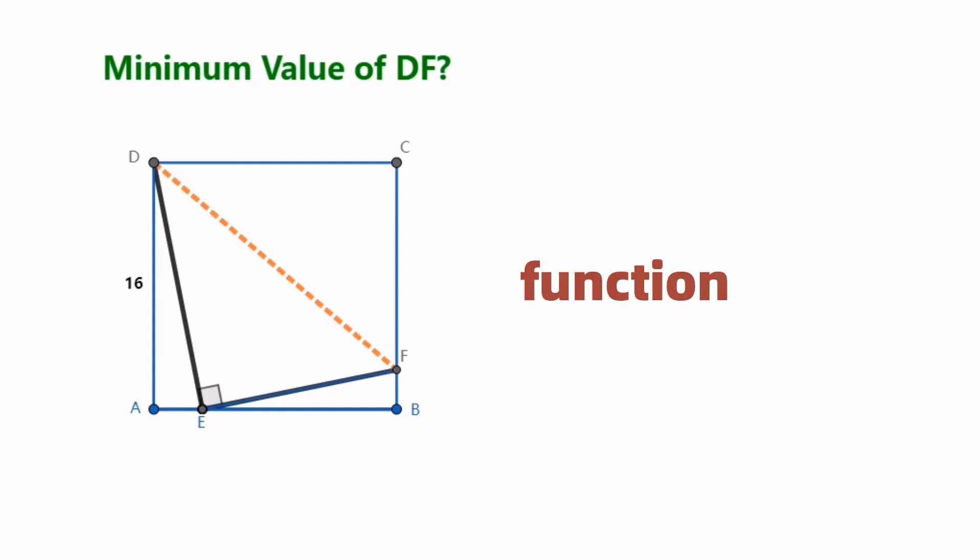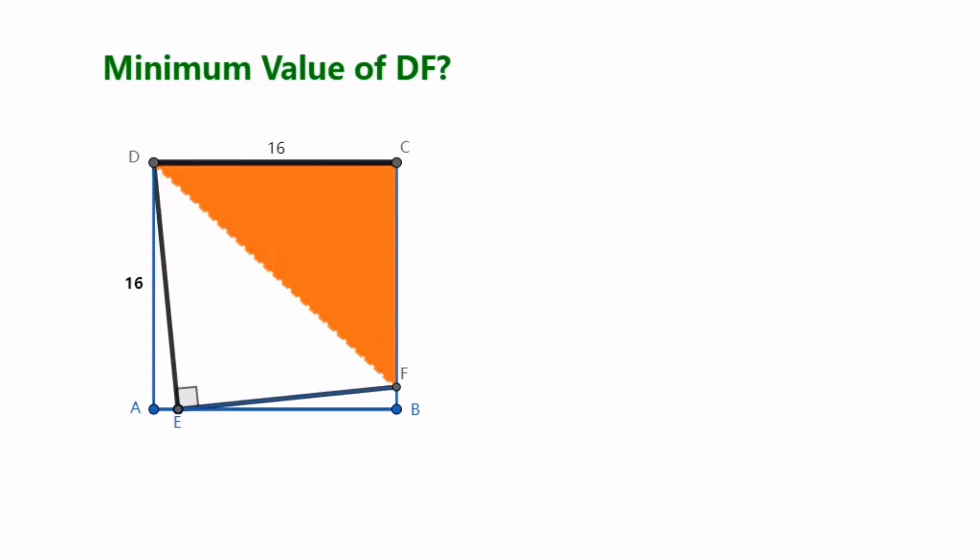Here are two solution ways to do it. The first method, using functions. DF is the hypotenuse of right triangle DCF. And one of the right angles CD is definite, it's 16 units. So the length of the hypotenuse DF is closely related to the length of the other right angle CF.